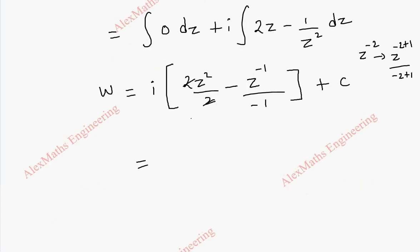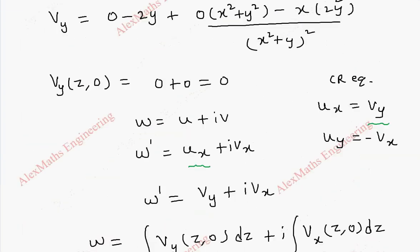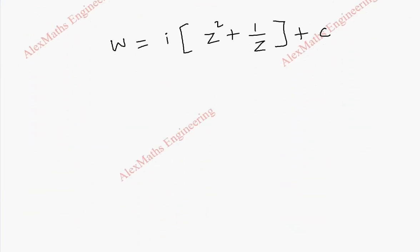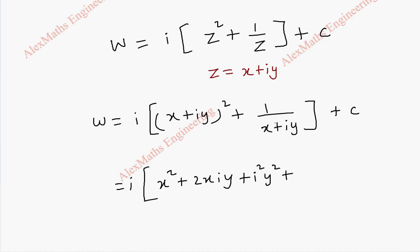After simplification we get w = i(z² + 1/z) + c, which is our analytic function w. But in this question we have to find the real part u. For finding the real part we substitute z = x + iy, so w = i(x + iy)² + 1/(x + iy) + c.